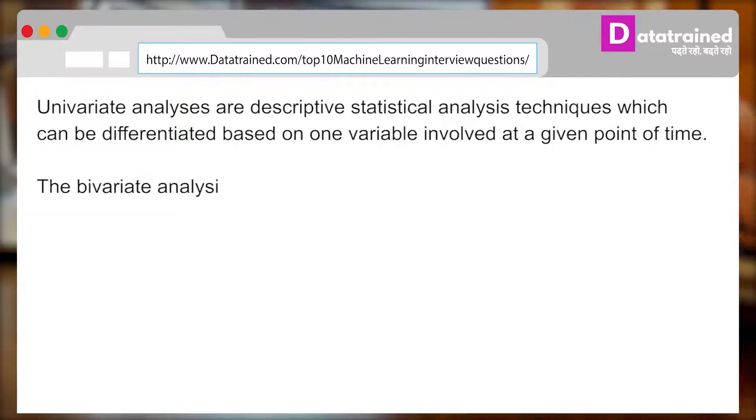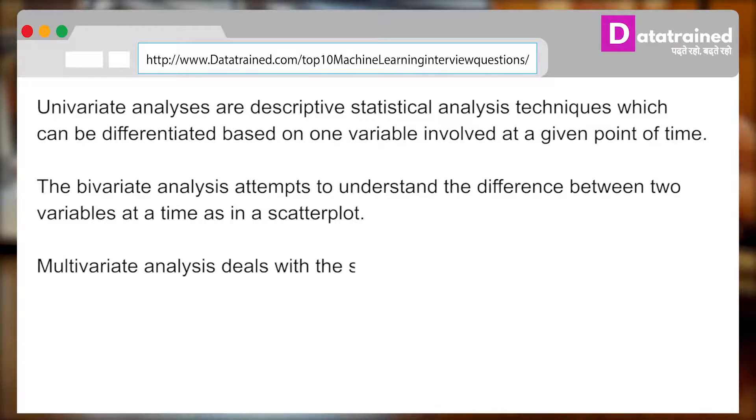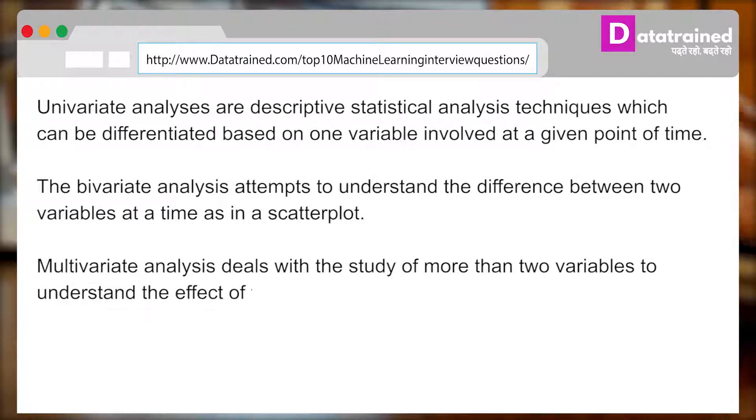The bivariate analysis attempts to understand the difference between two variables at a time as in a scatterplot. Multivariate analysis deals with the study of more than two variables to understand the effect of variables on the responses.